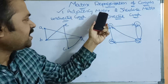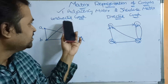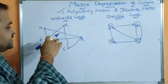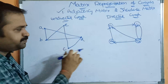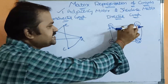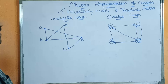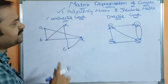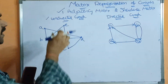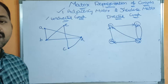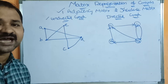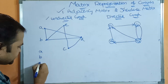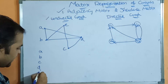Let us see how to construct adjacency matrix for undirected graph as well as directed graph. Undirected graph means the edges do not contain any directions. Directed graph means the edges contain some direction. In adjacency matrix, the vertices represent both row values as well as column values. Here the vertices are A, B, C, D, E.